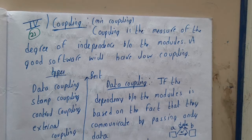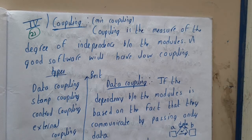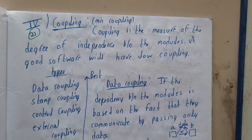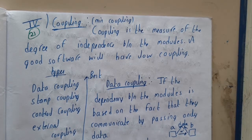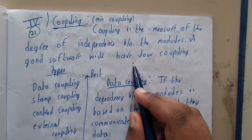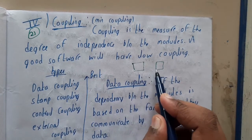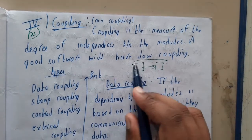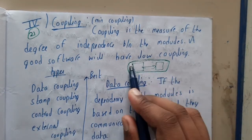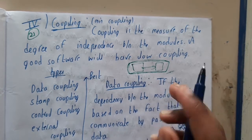Coupling is nothing but interaction or connection between different modules. If the components or modules have more dependency on each other, then they should be combined and made into one module. Only then it will be a better idea.